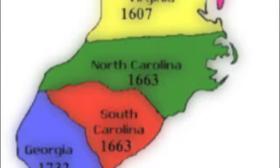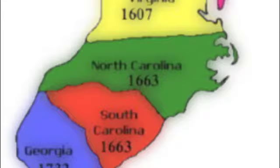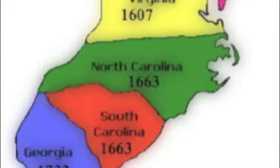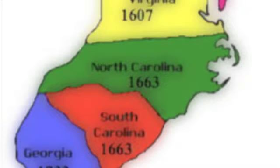The Southern colonies — Virginia, Maryland, North Carolina, South Carolina, and Georgia — had a warmer climate, rich soil compared to the middle and New England colonies, and a long growing season. It was an agricultural economy. At first it was based on tobacco, rice, and indigo, all grown for export. Eventually it would be cotton, but not at first.